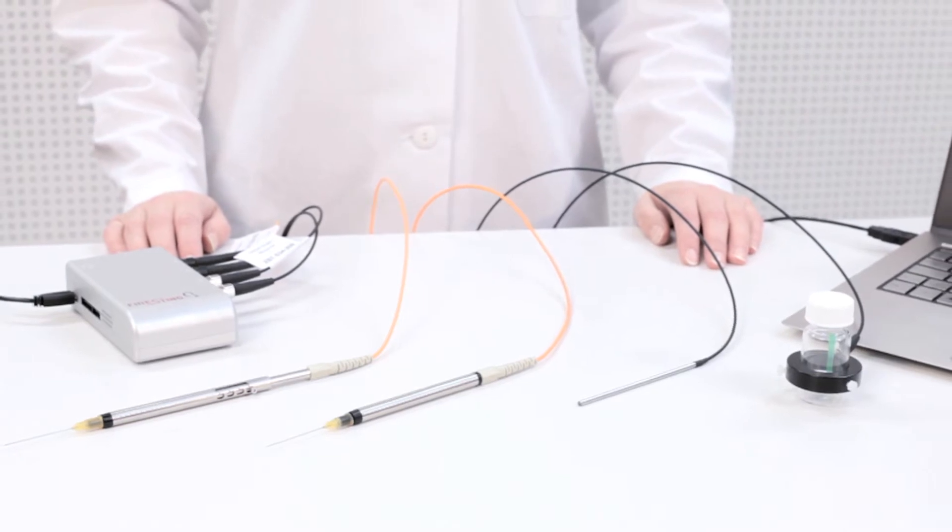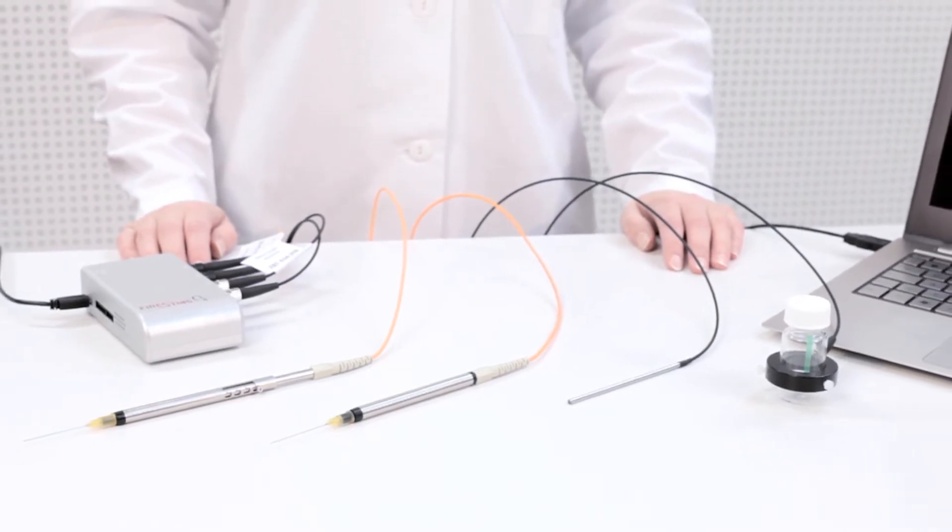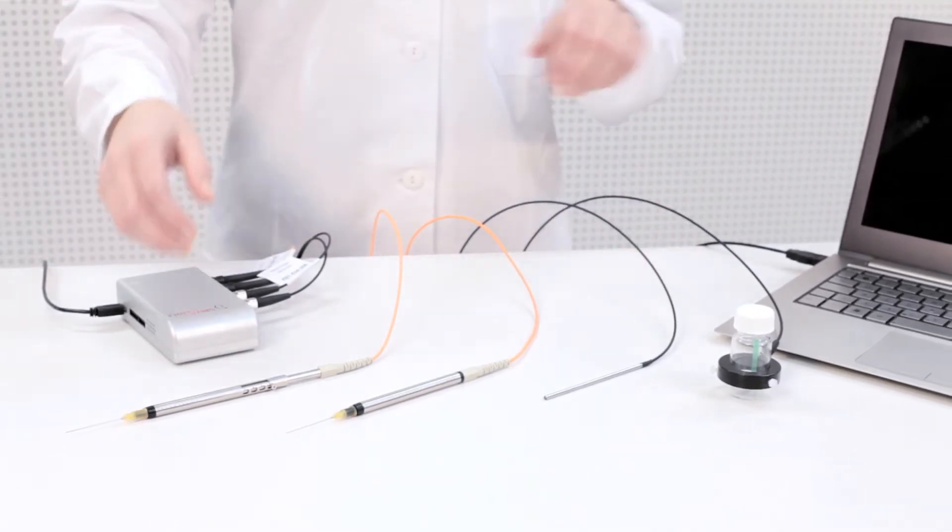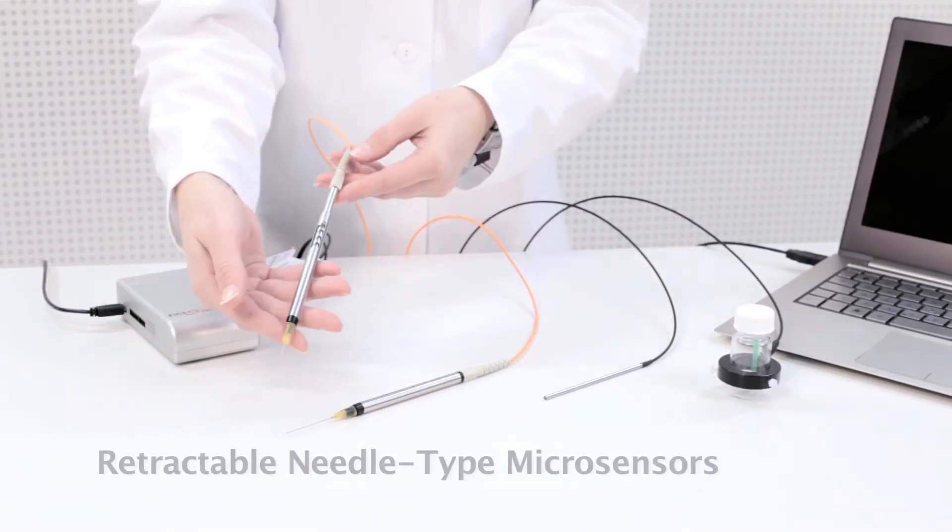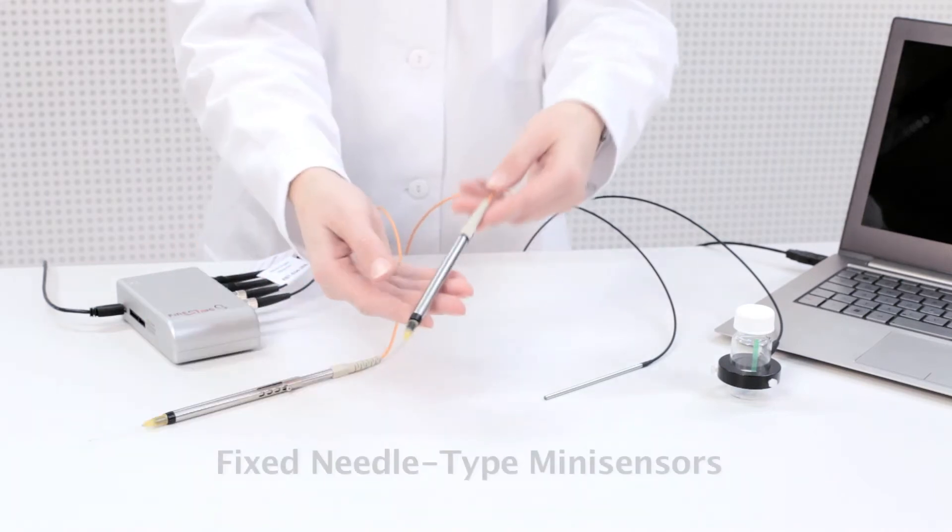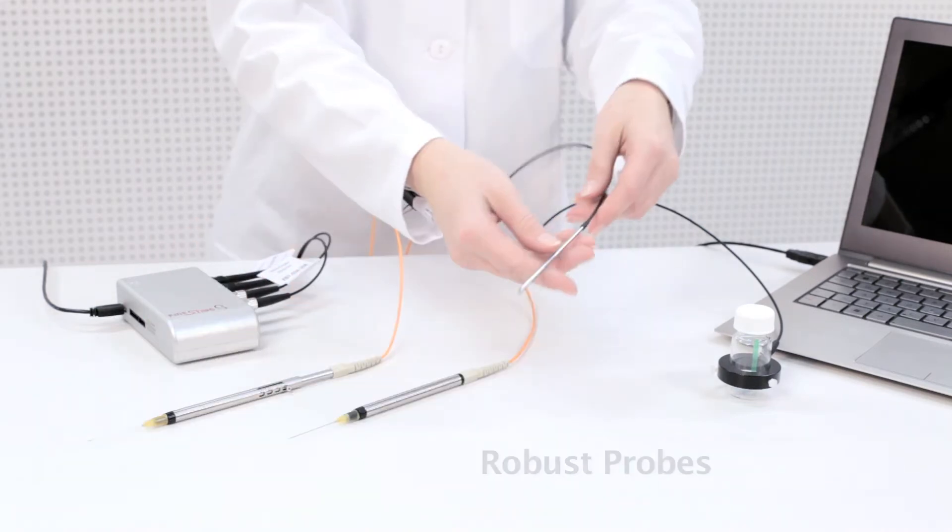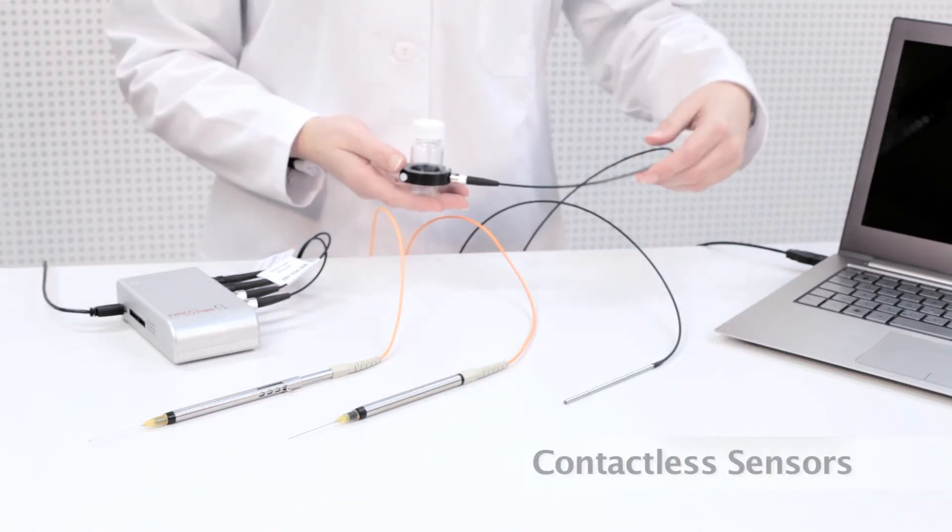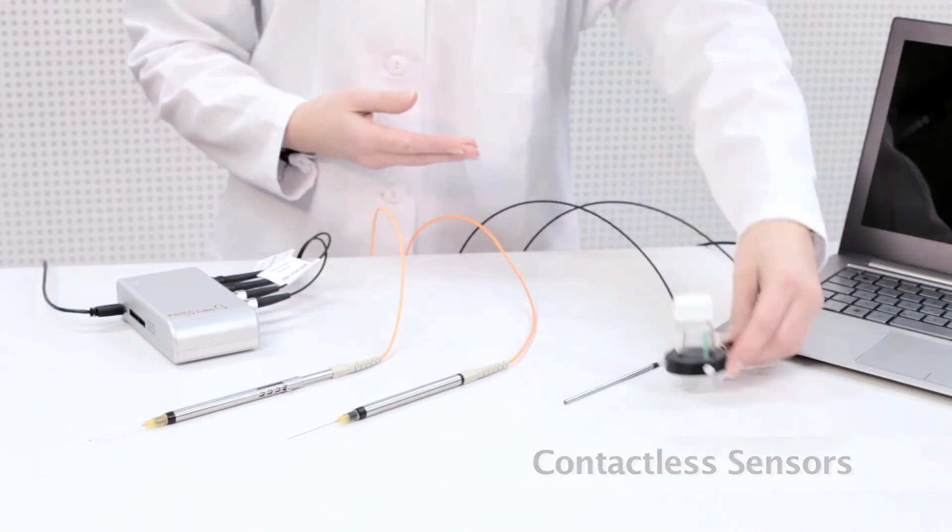And the Fire Sting O2 meter is outstanding due to its versatility, as it works with all oxygen sensors offered by PyroScience. This includes retractable needle-type microsensors, fixed needle-type microsensors, robust probes, and a number of contactless sensors like sensor spots, flow-through cells, and respiration vials.